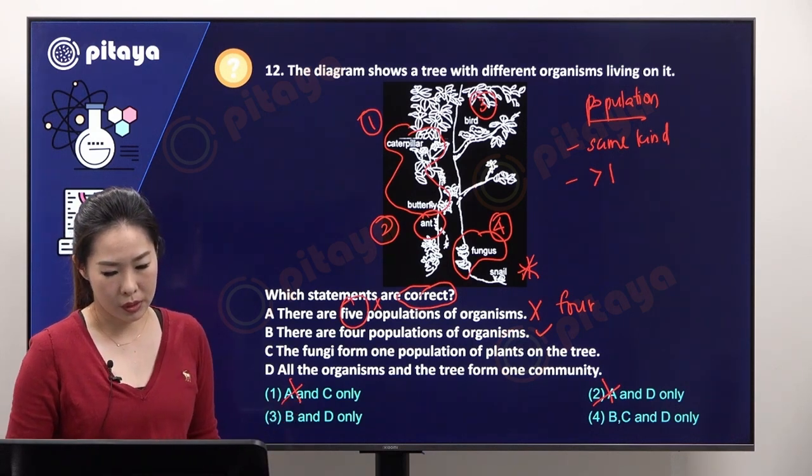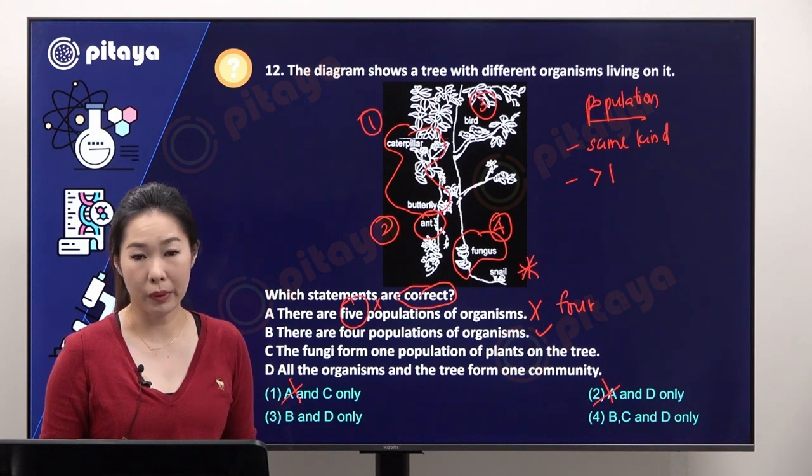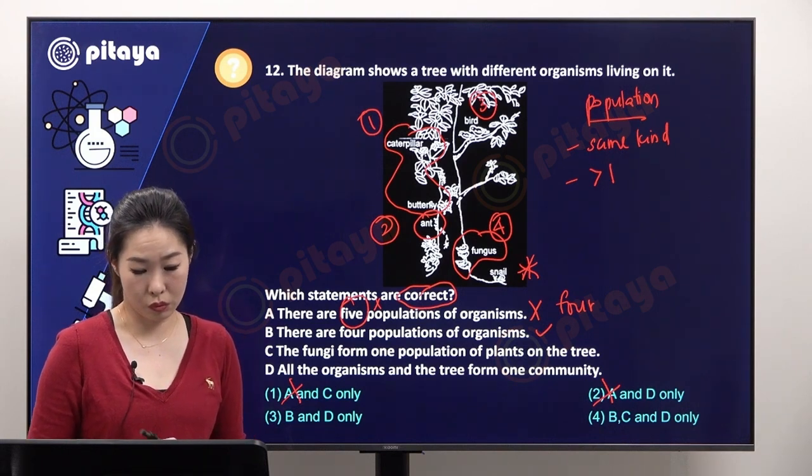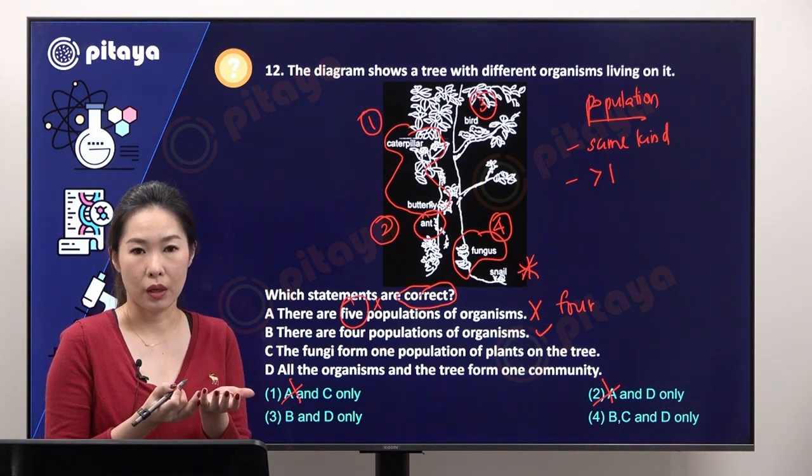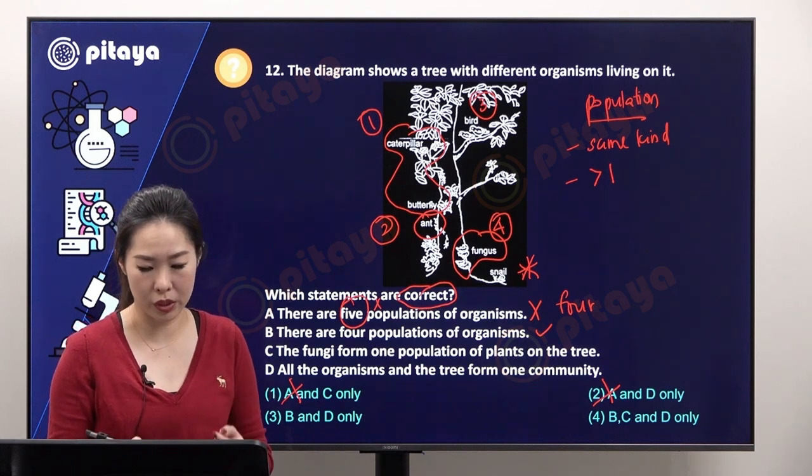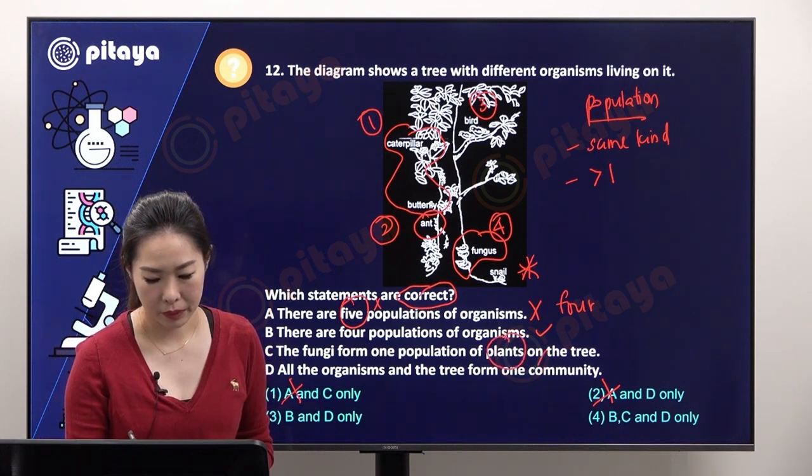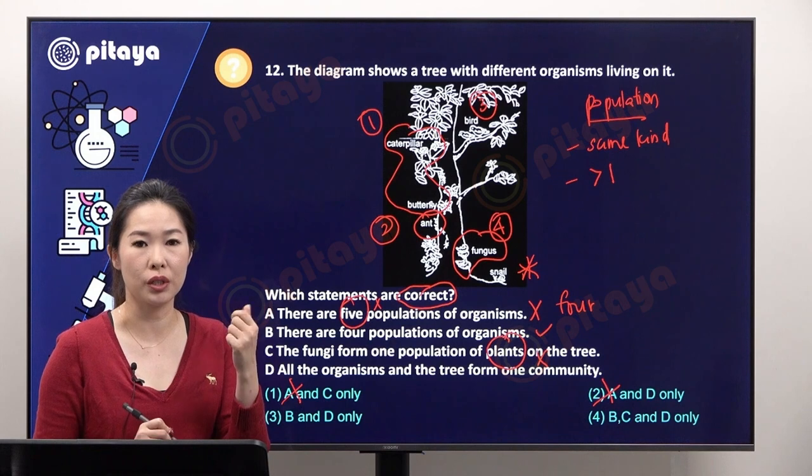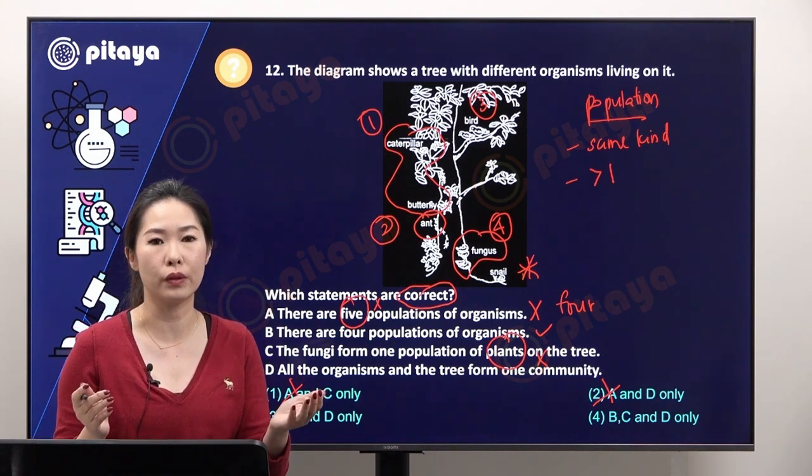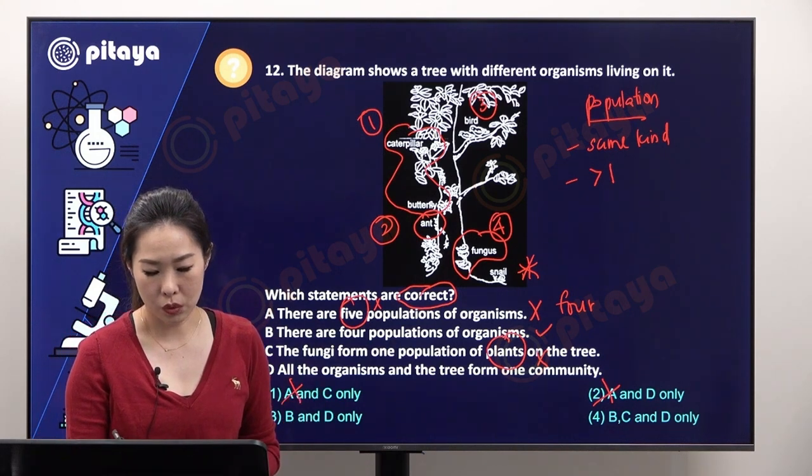For option C, fungi form one population of plants. It sounds pretty plausible. Fungus, they do form one population, but they are not plants. If you remember from the earlier question, plants and fungi, they are totally different types of living things. So C is not true.